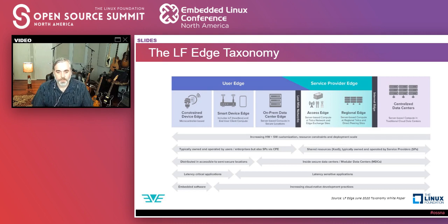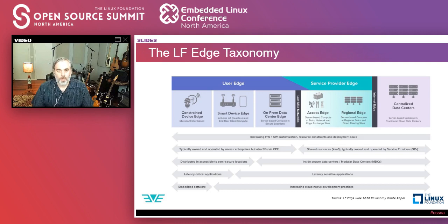IoT components tend to be upload-centric — getting data from the physical world, doing some preprocessing at the edge, and moving it upstream. Client devices like phones, TVs, and PCs tend to be download-centric. These devices are outside of a physically secure data center but still capable of running apps with virtualization or containerization. Below that is the constrained device edge — microcontroller-based, so constrained that I can't run apps anymore; I'm doing embedded software.